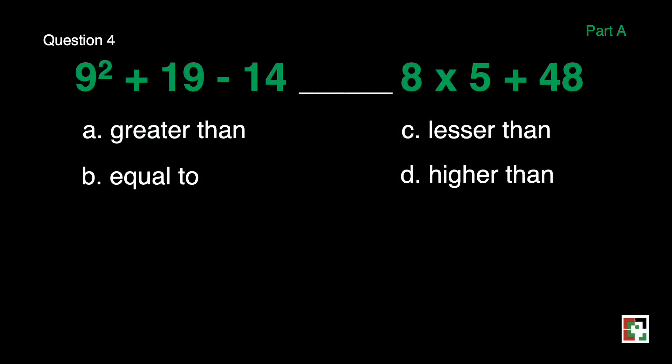Next question. 9 squared plus 19 minus 14 blank, 8 times 5 plus 48. Is it A, greater than, B, equal to, C, lesser than, and D, higher than?